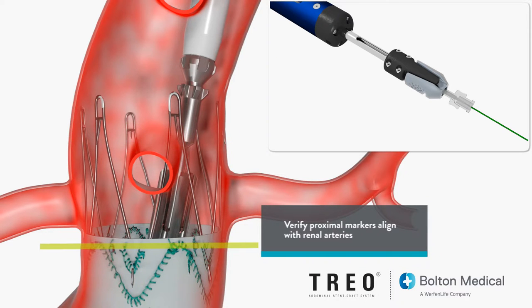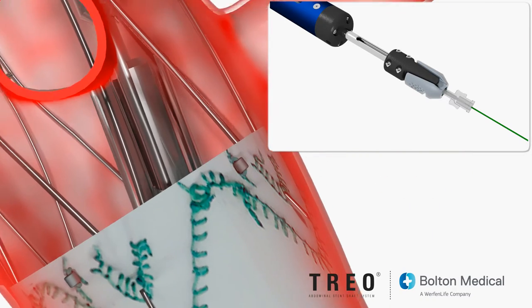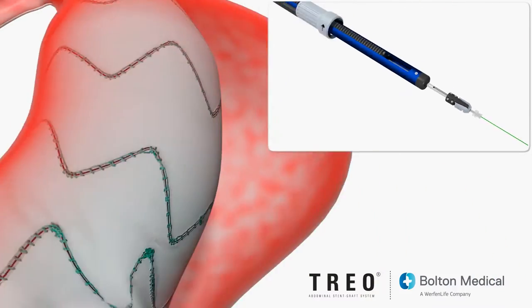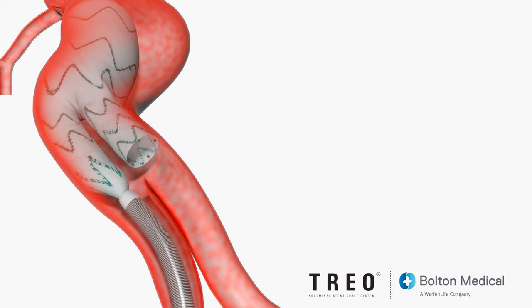Verify proper positioning of the stent graft using the proximal markers. At this time, the contralateral leg extension can be deployed while keeping the end of the ipsilateral leg captured.